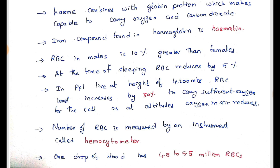When we live at high places like the Himalayas or Shivalik ranges at heights of around 4000 meters, the oxygen content in the air reduces drastically. Our blood needs more oxygen to carry because the level of oxygen available in the atmosphere goes down, so our body produces more and more RBCs to carry enough oxygen. The number of RBCs is measured by an instrument called a Hemocytometer. One drop of blood has 4.5 to 5.5 million RBCs.